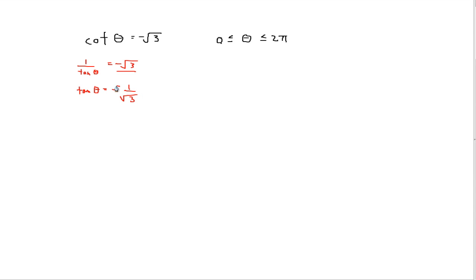We know that it asks for where tan of theta is equal to negative 1 over root 3. So negative means that in this unit circle, tan will be negative in quadrants 2 and quadrants 4. So we know that our solution must lie within these two quadrants.